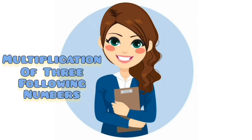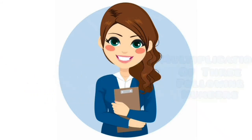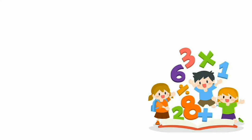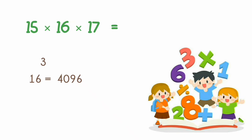When there are three synchronized numbers, how do we easily multiply this kind of numbers? Let's take an example. In this we have to cube the second number, or we can say the second largest number, and subtract the same number — 4096 minus 16 — the answer is 4080.